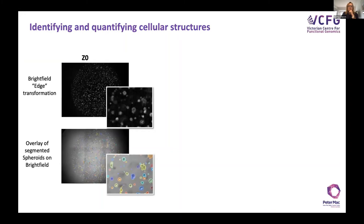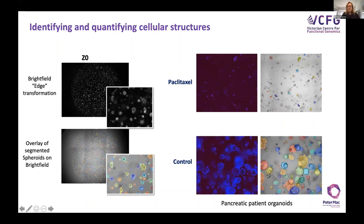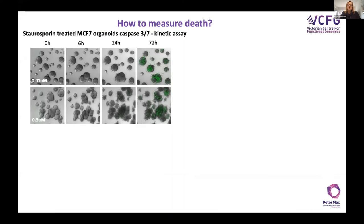We found we needed to do some tricky things to identify our structures. We use a bright field edge inversion method so that we can now identify the structures. We can do the cell painting, identify individual structures, see the dead ones and the live ones, and work through the pipeline. We do a lot of work trying to get measurement of cell death, and there's a real trick to that.